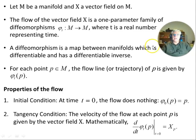Let M be a manifold and X a vector field on M. The flow of the vector field X is a one-parameter family of diffeomorphisms, phi_t that map the manifold to itself. It's a function that maps from the manifold to the manifold, where t is a real number representing time.